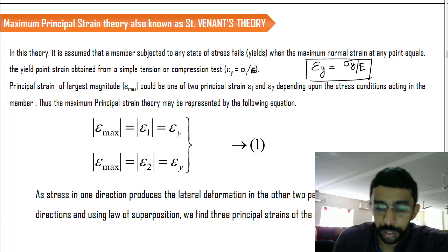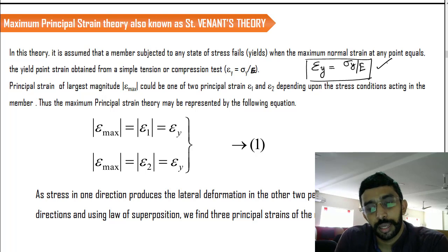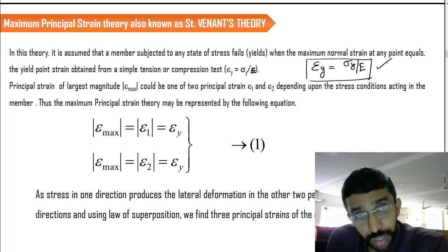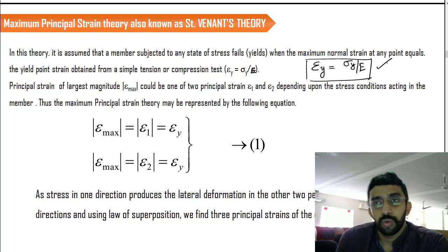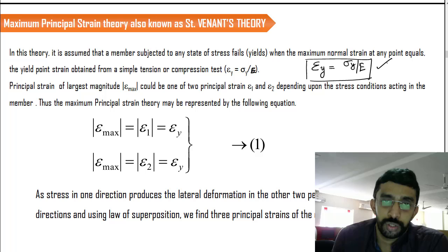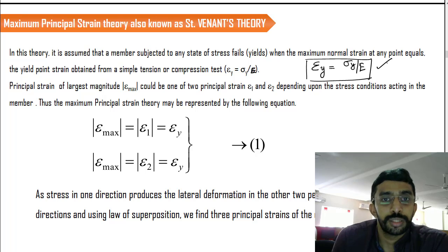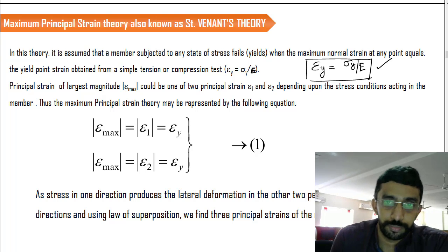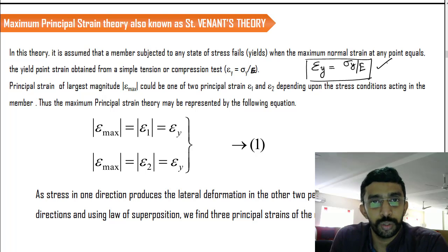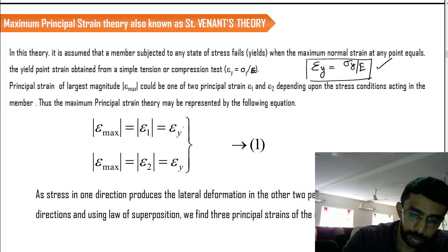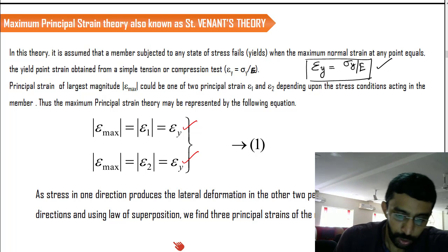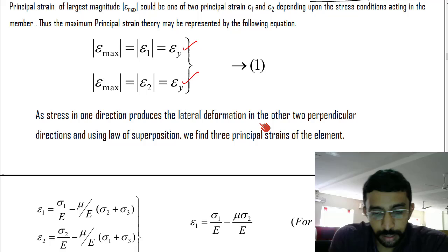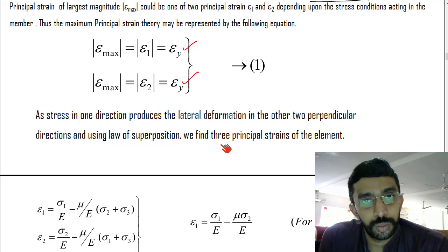For uniaxial loading, the basic strain calculation is sufficient, and we have already learned how to calculate strain — there is lateral strain and longitudinal strain. When the loading direction is more than one, meaning a bidirectional or three-dimensional state, the calculation of strain uses Poisson's ratio. Here we are equating everything towards the yield value of strain, since stress in one direction produces lateral deformation in the other two directions.